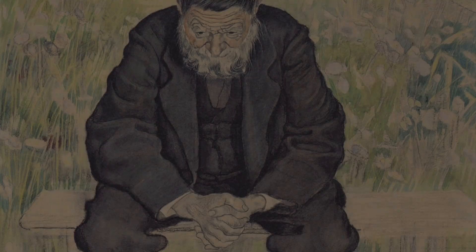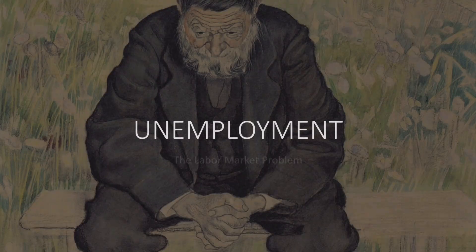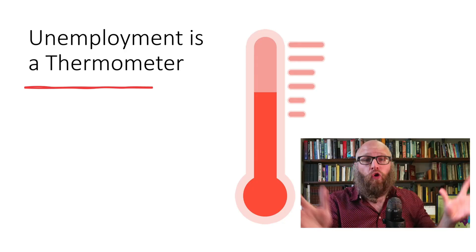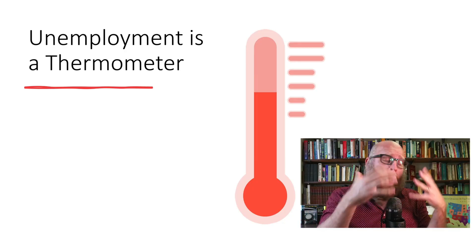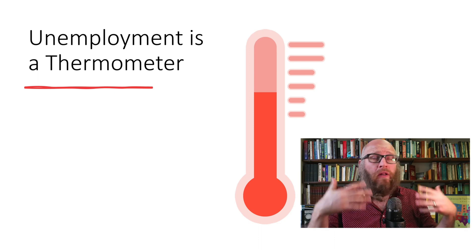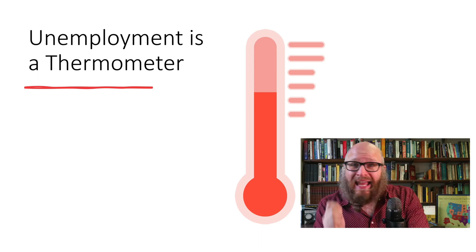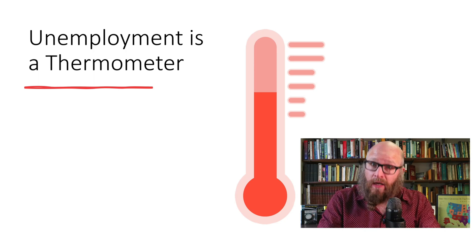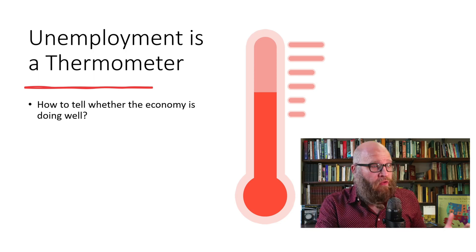Welcome to Fundamentals of Macroeconomics. This chapter we are discussing unemployment, the labor market problem. Previously we have discussed the GDP, the total productive capacity of an economy. While this had a lot of value for describing long-run economic progress, in the here and now, the number one thing people care about is whether or not they have enough income from employment to meet their daily needs.